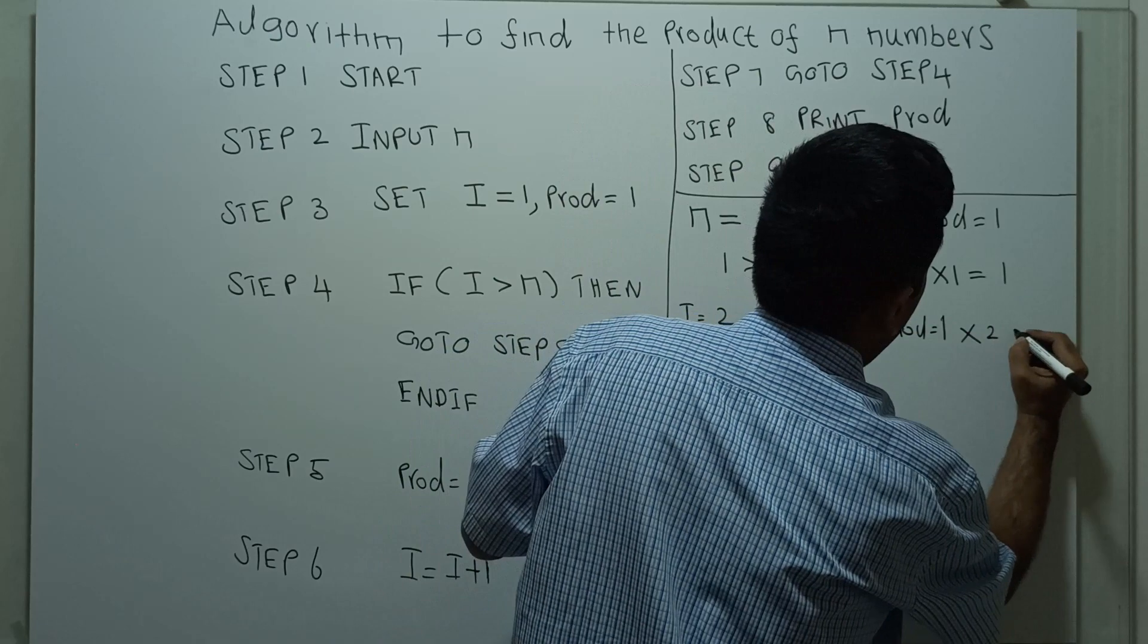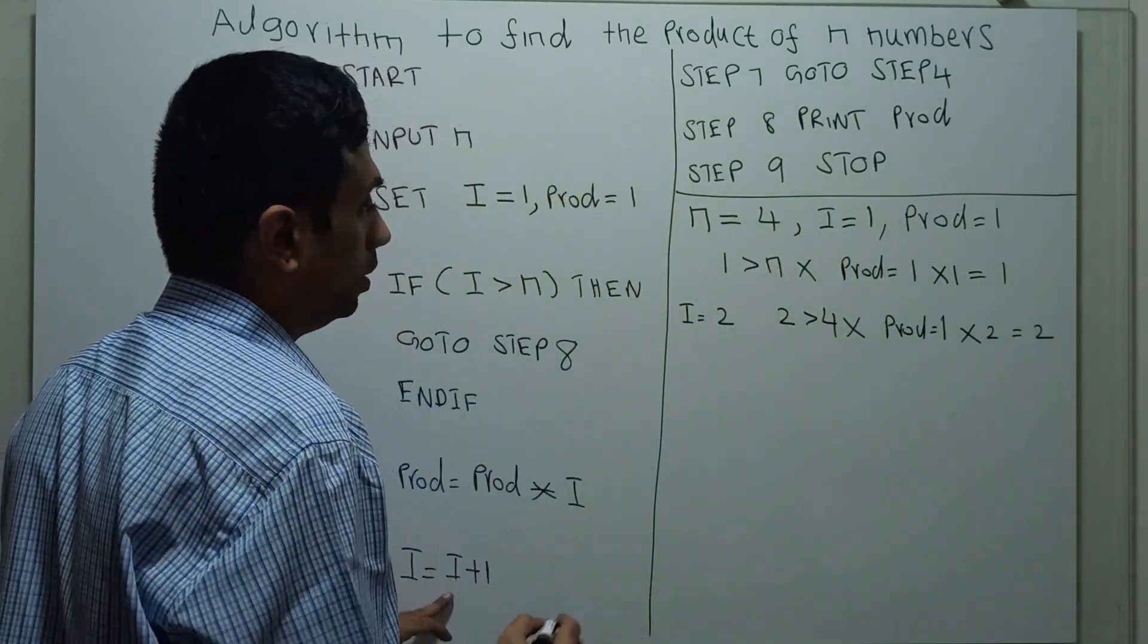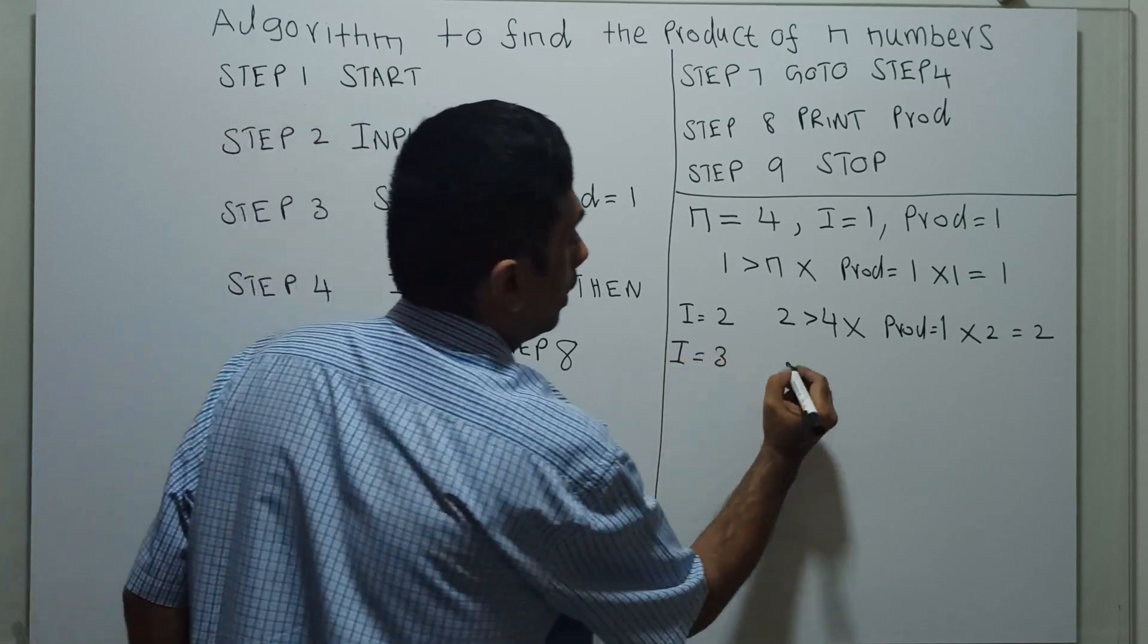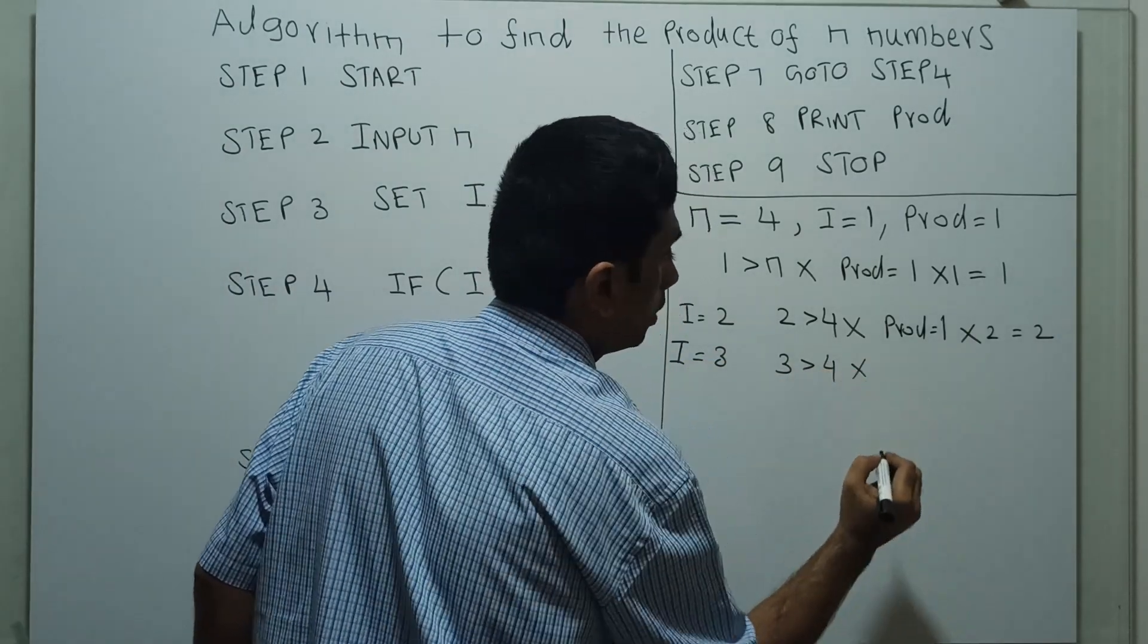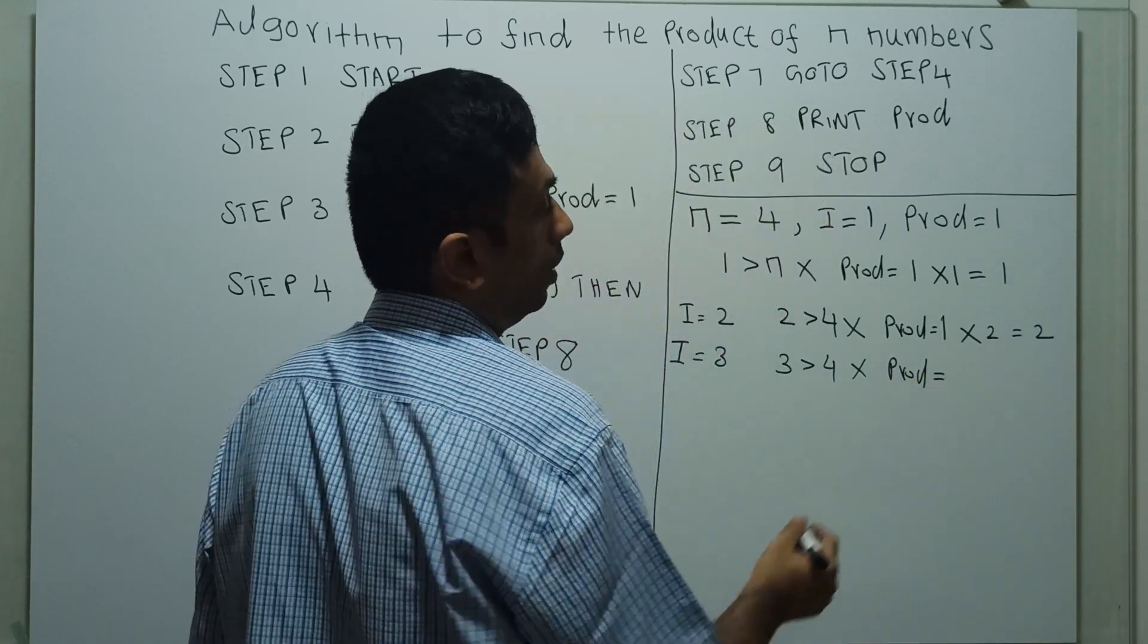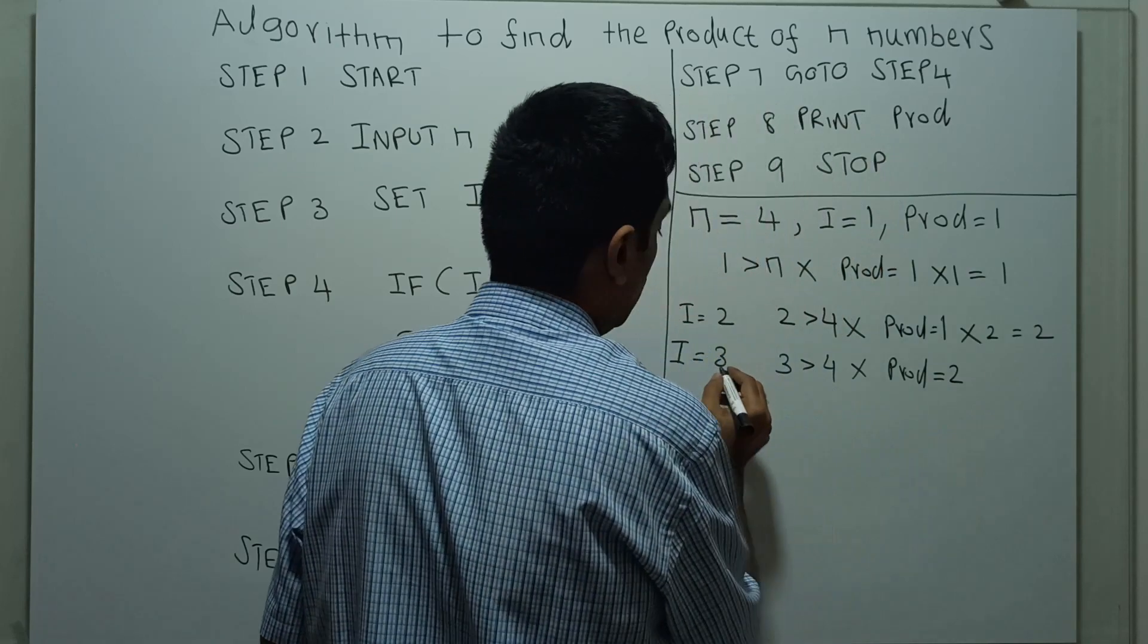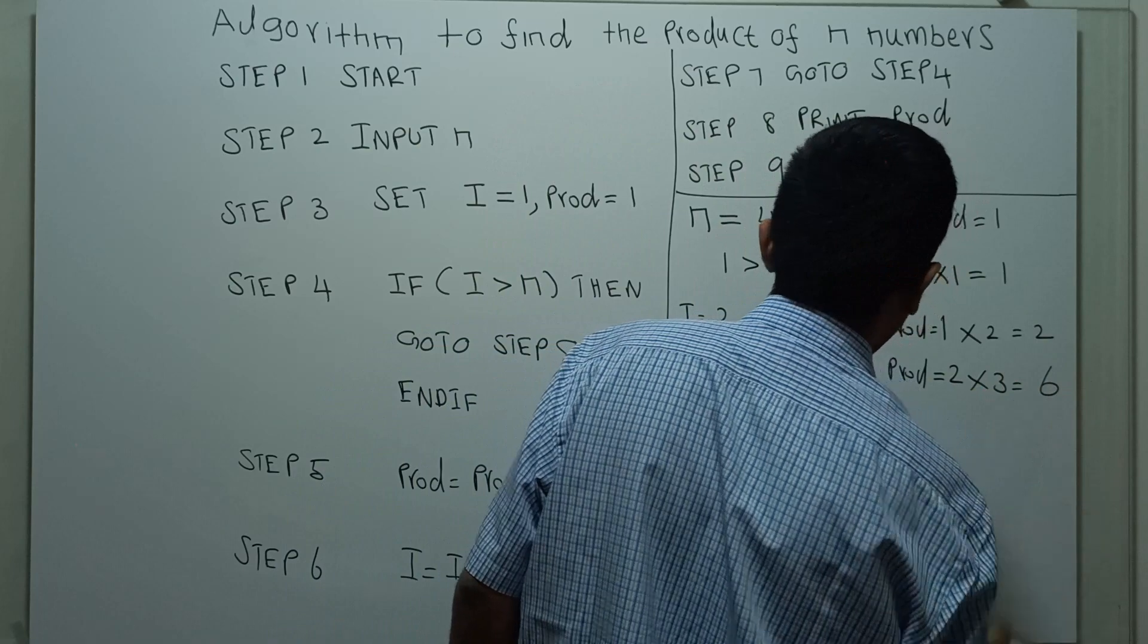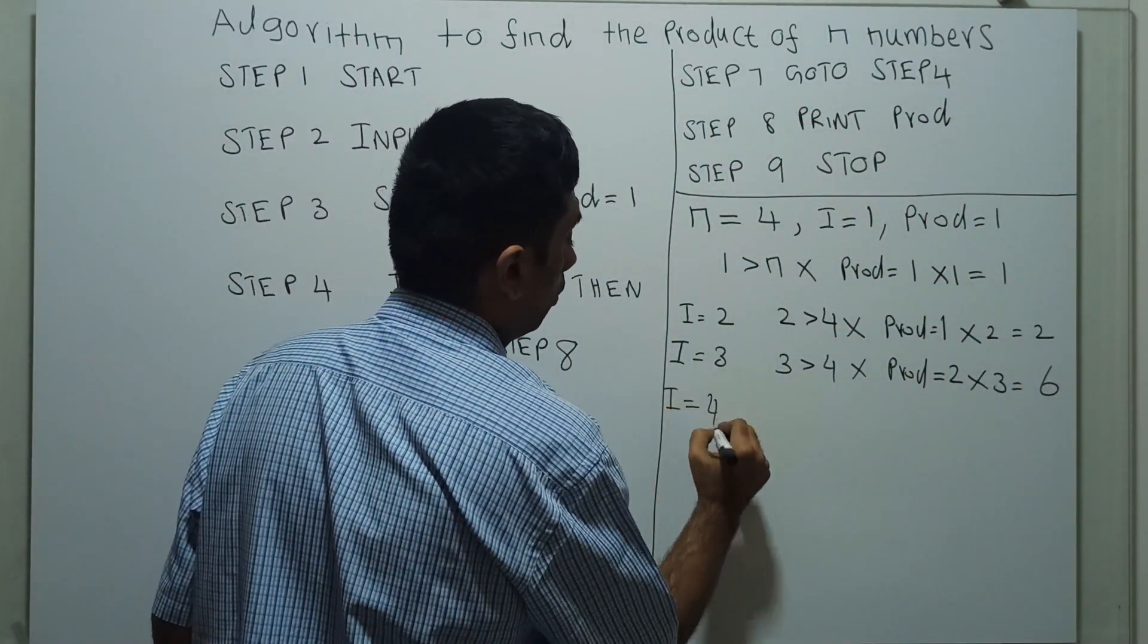which is 2, giving 2. Incrementing i to 3. Checking if 3 greater than 4, false. Product equals 2 times 3, which is 6. Incrementing i to 4.